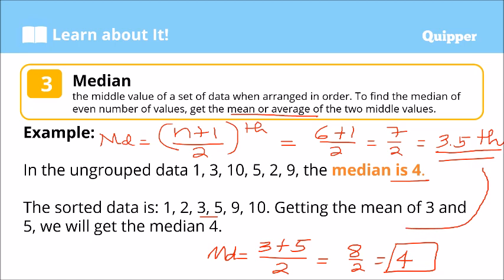So again, 3.5th position means between the 3rd and 4th values — that's 3 and 5. In between nila, that's 3 plus 5 over 2, equals 8 over 2, equals 4. Our median is 4. Meaning nito, kasi ang median ay 4 — 50% or kalahati ng data ay greater than 4, and kalahati din ng data ay less than 4. Yun ang ibig sabihin ng median.